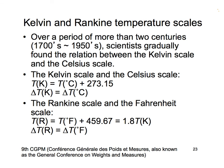We already know that the Kelvin temperature scale is related to the Celsius temperature scale through a difference of 273.15 degrees, and one Kelvin difference is equal to one degree difference on the Celsius scale.